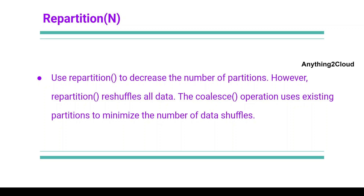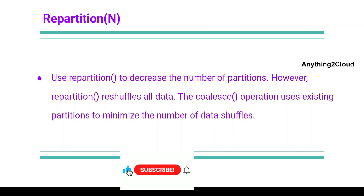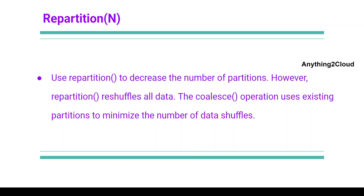Next is repartition. Use repartition to decrease the number of partitions. However, repartition reshuffles all data, the same way it happens in coalesce — here also you need to reshuffle the entire data. The main difference between coalesce and repartition is that the coalesce function uses existing partitions to minimize the number of data shuffles.